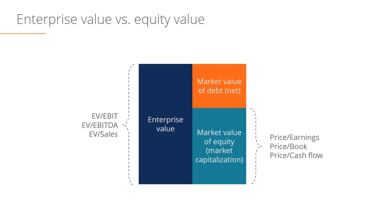On the other side of this equation, we have equity value metrics like price to earnings, price to book value, and price to cash flow. Notice that these three metrics are all after interest. Earnings, book value — which is an equity value metric — and cash flow are both after interest expense, and therefore the remaining value is available to equity holders. Hopefully this gives you a clear understanding of the difference between enterprise value and equity value, and it's important to always know the difference between the two and which one we're talking about.